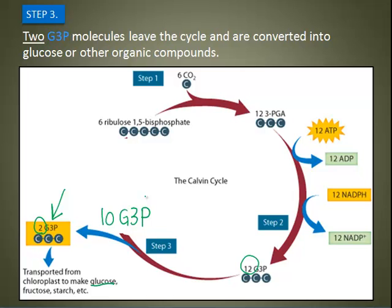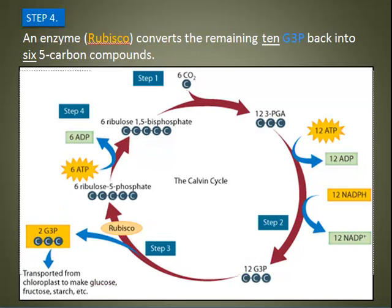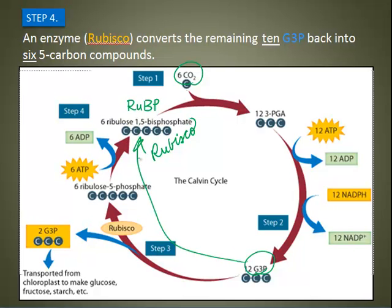In step four, the remaining 10 G3P molecules must be converted back into RuBP to start the cycle over. An enzyme converts the 10 G3P back into six five-carbon compounds, which completes the Calvin cycle. The RuBP is replenished and can be used again to fix more carbon dioxide. This conversion of G3P into RuBP requires energy in the form of ATP.